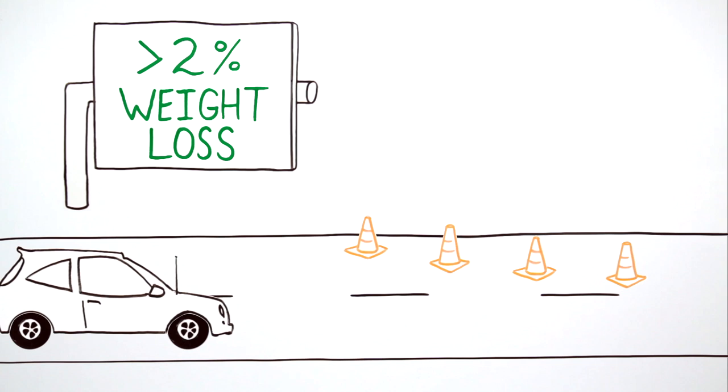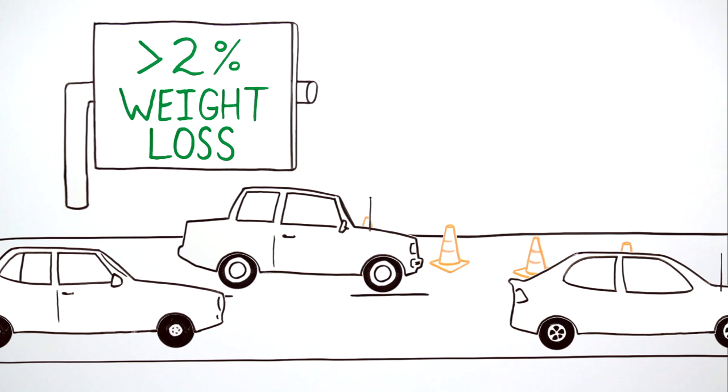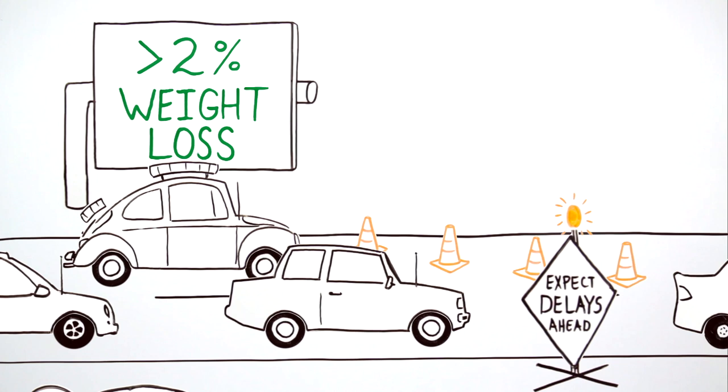Like blocking a lane of traffic, studies show that significant dehydration, measured as more than a 2% loss in body weight, impairs the body's ability to regulate its temperature and can hurt endurance and team sport performance.